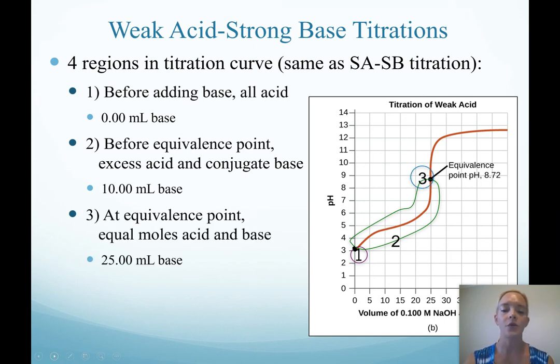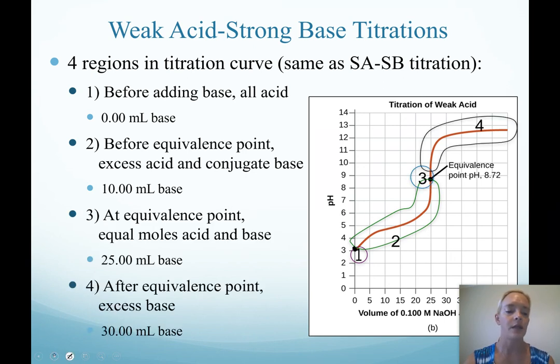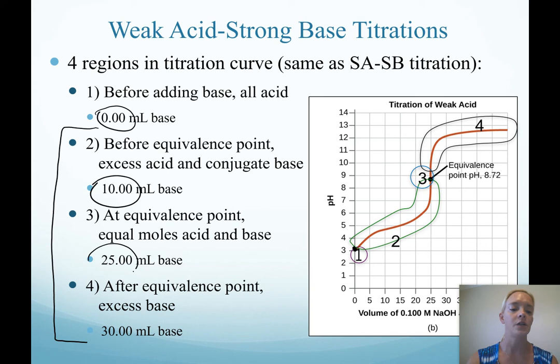Point 3 is at the equivalence point, and region 4 is after the equivalence point when we have excess base. So our points or regions in the curve are the same as for strong acid. We just calculate the pH differently. What I encourage you to do is to set up your change tables for points 2 through 4 in our titration at these volumes of base: 0, 10, 25, and 30. Set up your change tables for those. And when we return, I will begin by calculating the pH at each of these four points.